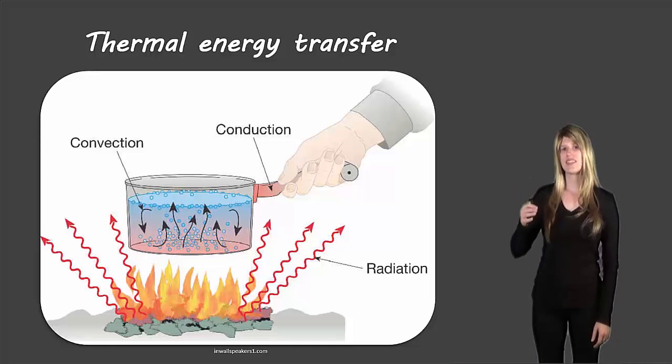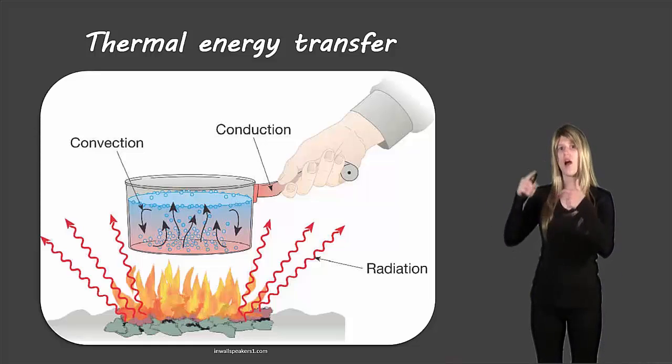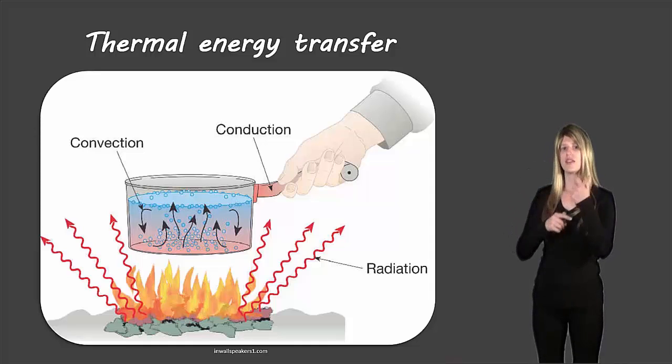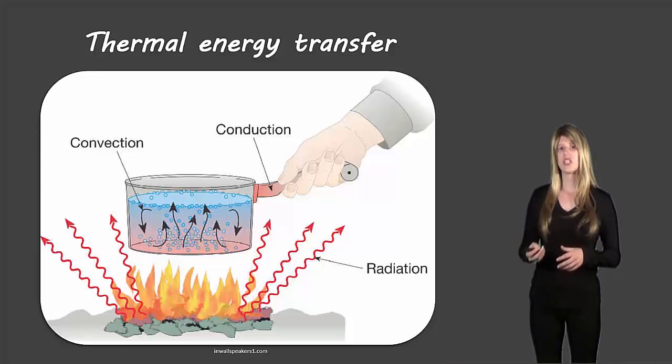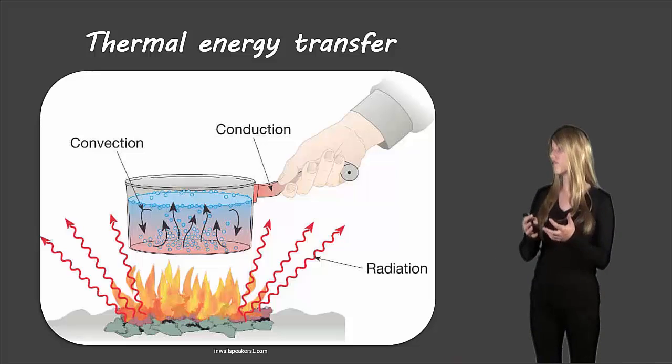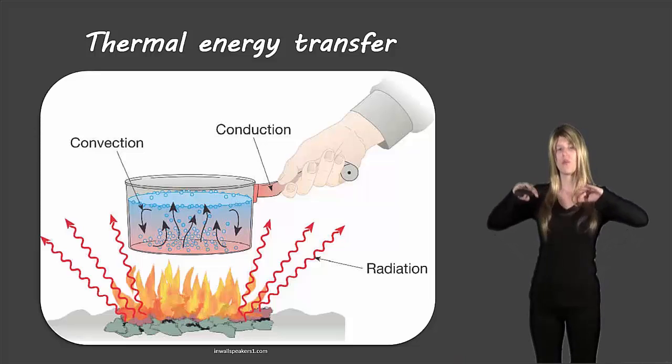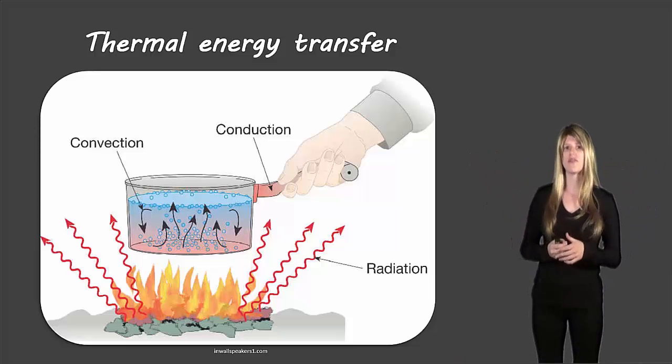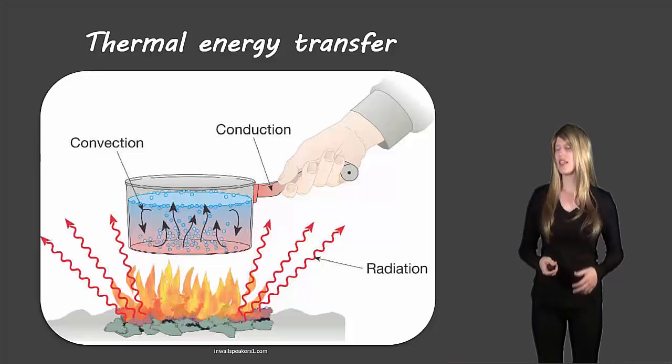Convection, you can see this is happening and I don't know if that's water or whatever happens to be in the pot and there's a movement of the water molecule so the fluid is moving and that's the transfer of heat inside of that pot. And then radiation is coming from the flame there. So you have waves of heat that are coming off of that flame and so that's the radiation.